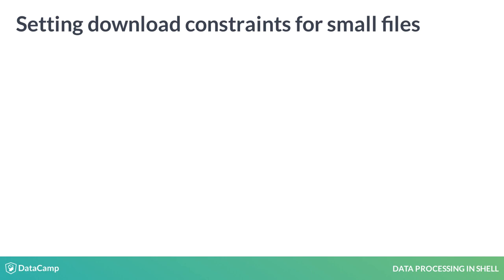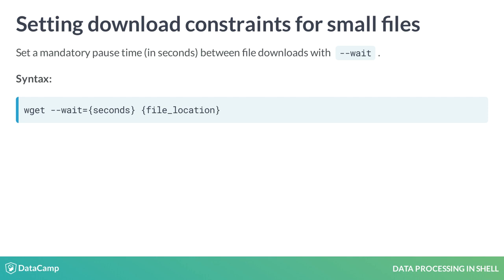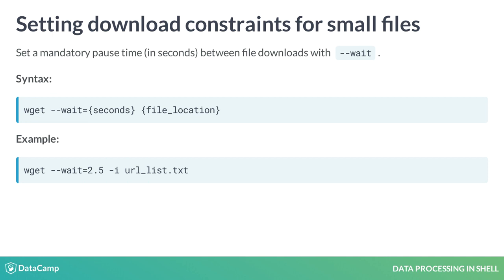For downloading smaller files, enforcing a download bandwidth won't work as well. To avoid overtaxing the file hosting server, it is more useful to enforce a mandatory wait time between file downloads using --wait. The default time interval is set to seconds. For example, wget --wait=2.5 creates a 2.5 second pause between downloading each file stored in a url list file.